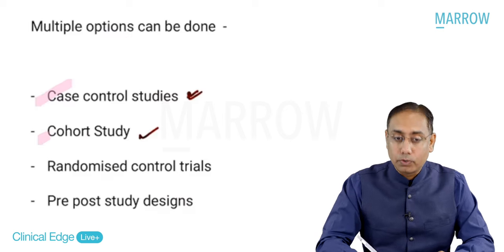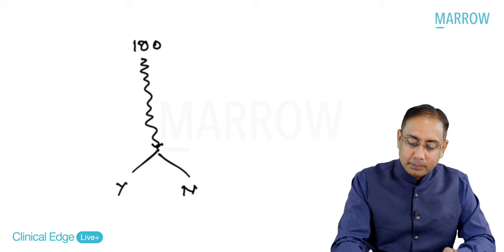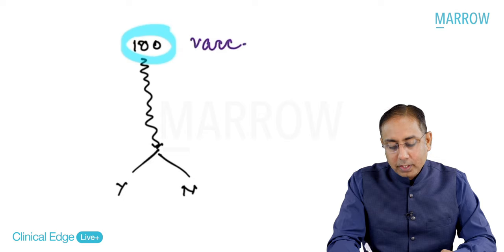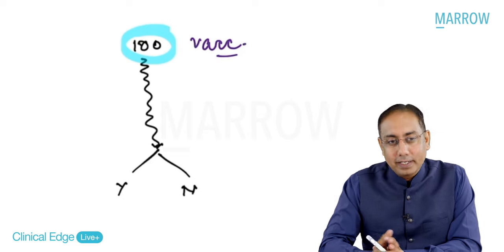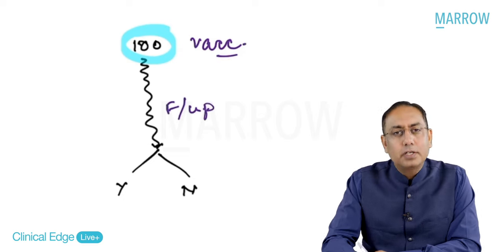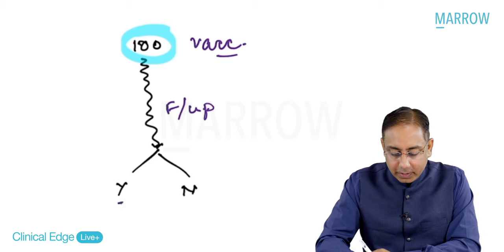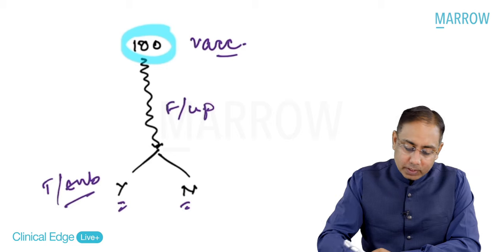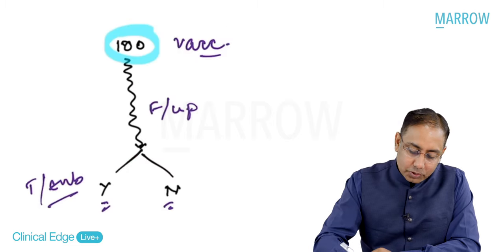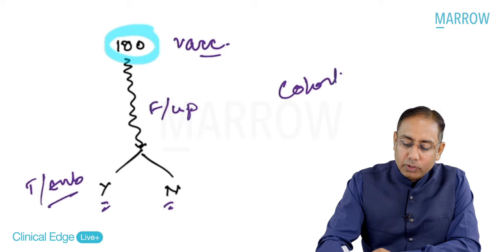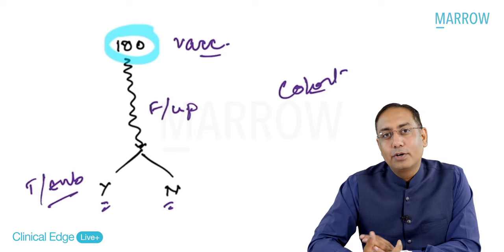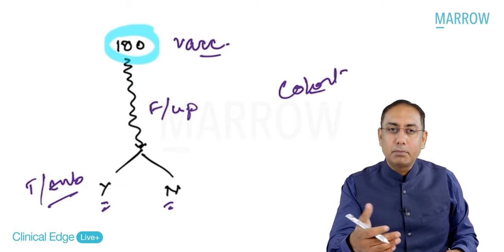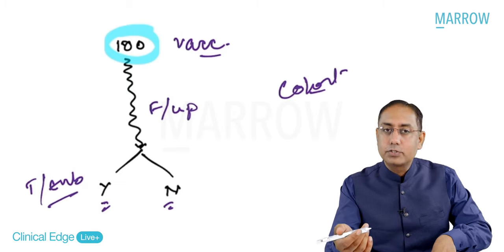We can also do cohort studies. For example, I take 100 people who were vaccinated, follow them up for a certain period of time, and then divide them into those who get thromboembolic phenomena or not. That is a typical cohort study. Cohort studies have their own limitations: they are long and time-consuming and they have attrition bias, as people may fall out of the study.